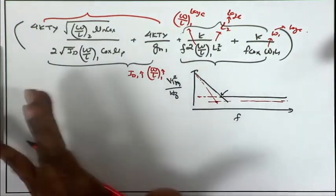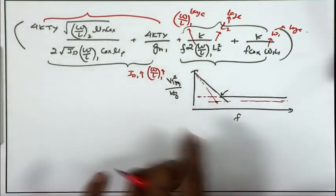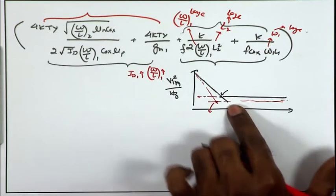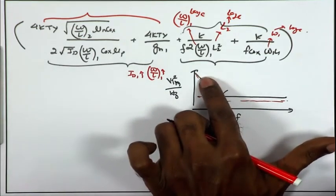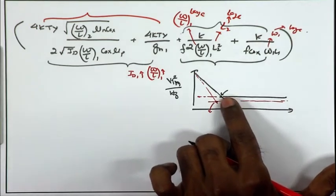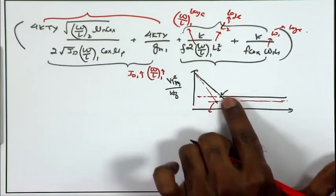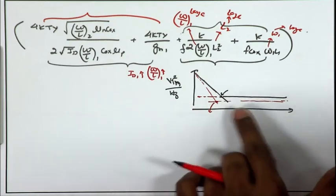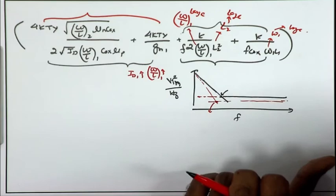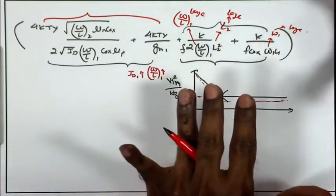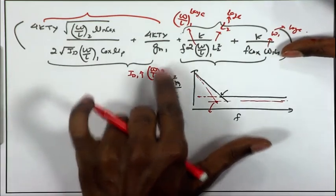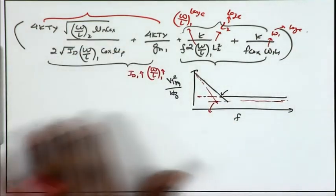These are the favorable design directions: reduce the white noise floor and push the corner frequency to higher frequencies. The key controllable parameters are the W/L of the input device, the channel length L2 of the load device, and the bias current I_D. However, every choice involves trade-offs affecting other performance metrics.